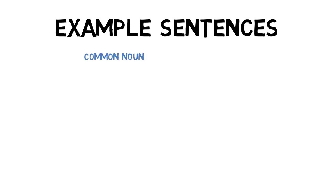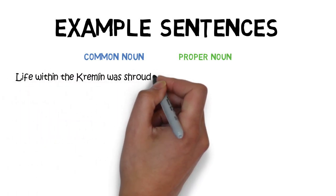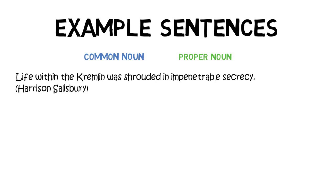So let's look at some example sentences. In these examples, the common nouns are in blue and the proper nouns are in green. 'Life within the Kremlin was shrouded in impenetrable secrecy.' Well, 'life' is a common noun — common nouns are written with lowercase letters, but not when they start a sentence. That's when you can give a common noun a capital letter. So 'life' starts the sentence, 'Kremlin' has a capital K because it's the name of a citadel in Moscow, and 'secrecy' is just a common noun with a lowercase letter.